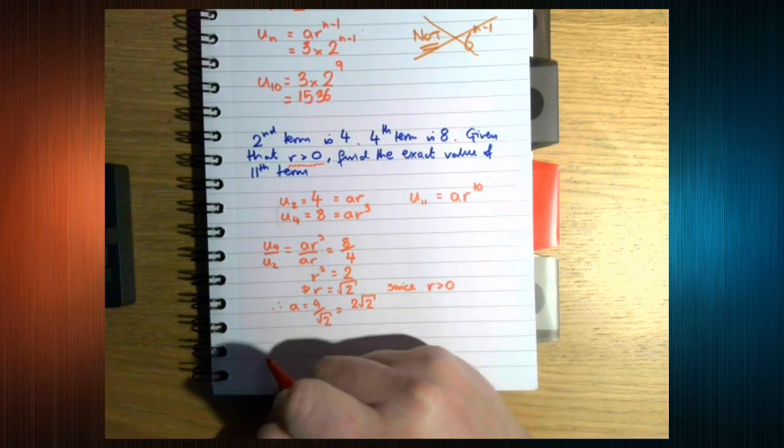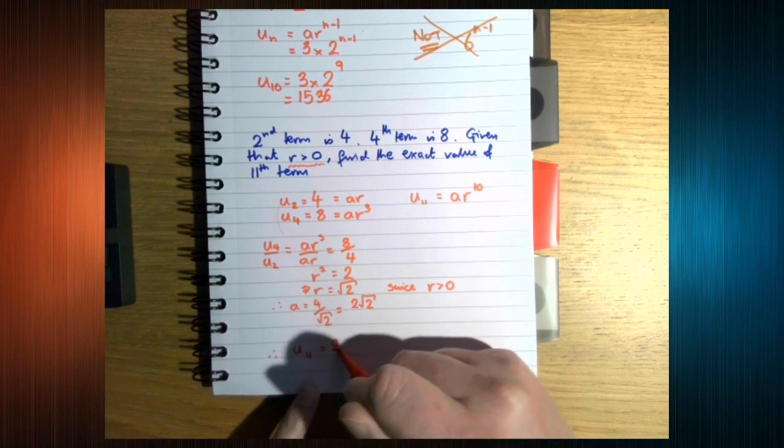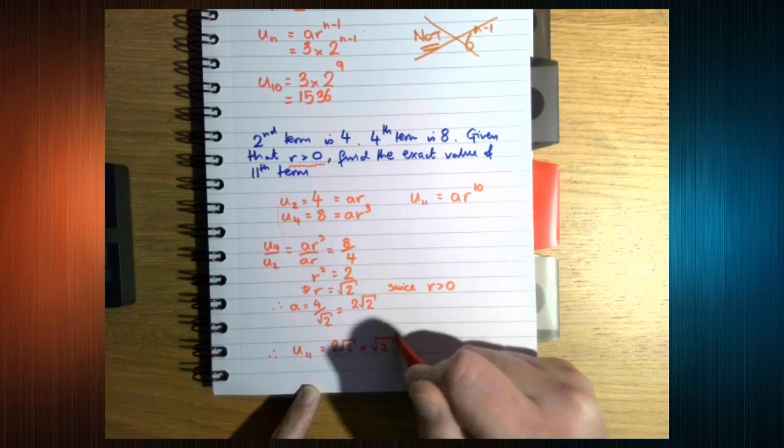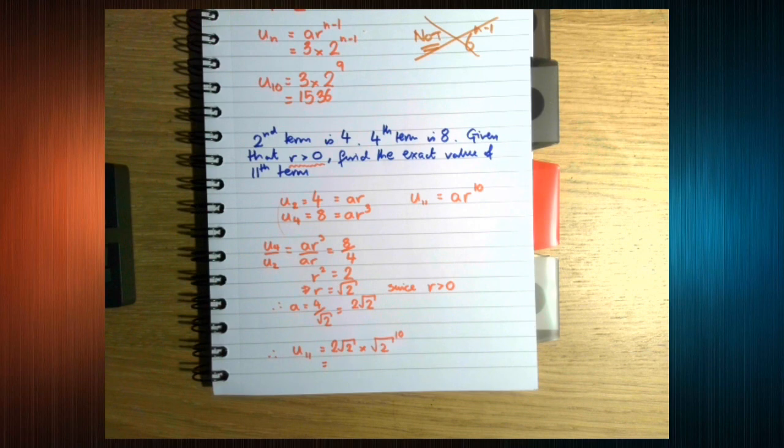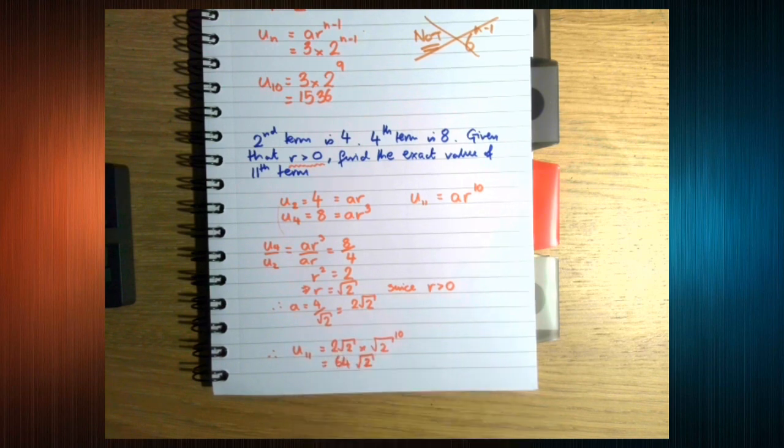So therefore, the eleventh term is 2 root 2 times root 2 to the 10th, which you stick in your calculator and you get 64 root 2.